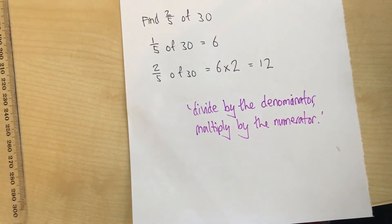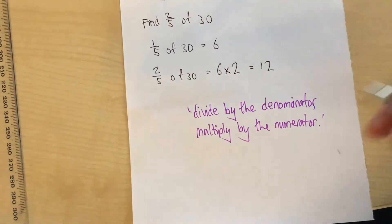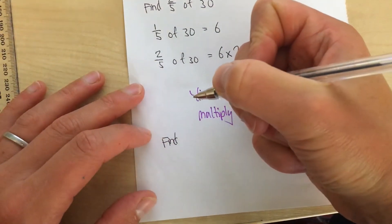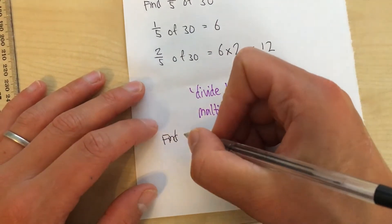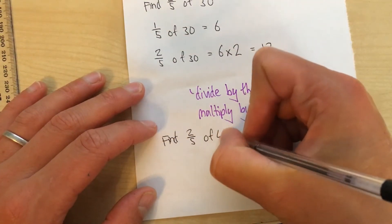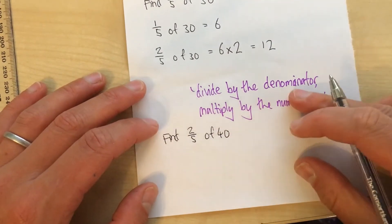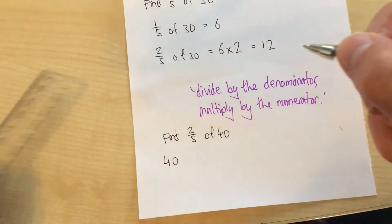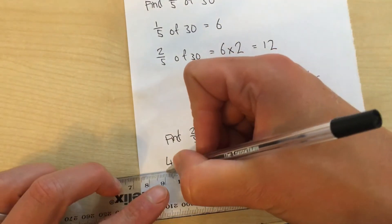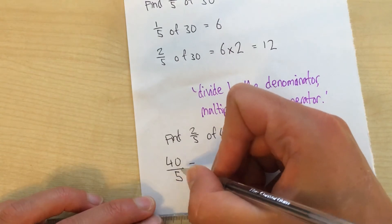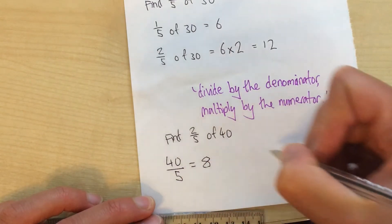Let's have another one just to try out this method. Find, let's say, 2 fifths of 40. Divide by the denominator. So we take our total 40, divide by the denominator, which is 5. 40 divided by 5 equals 8.